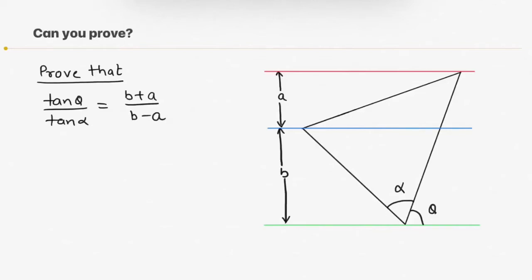Welcome to HMSO graduates. Today we have a problem. In this question you can see there is an equilateral triangle and there are three horizontal parallel lines represented by red, blue and green color which are passing through the vertices of the triangle.